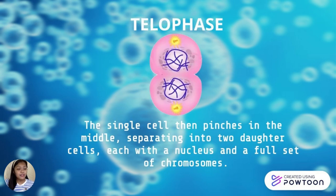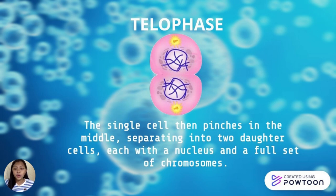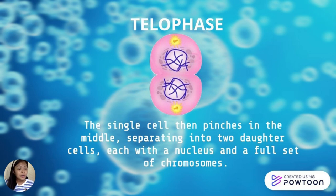Lastly, we have telophase. A complete pair of chromosomes assembles at each cell pole. To build two new nuclei, a membrane forms surrounding each set of chromosomes. The single cell then pinches in the middle, separating into two daughter cells, each with a nucleus and a full set of chromosomes. This is called the process of cytokinesis.